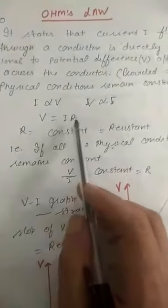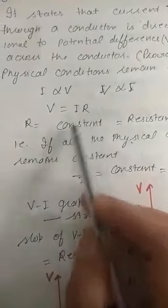And V is directly proportional to I. And V is equal to IR. Here we have taken the R as a constant, and this constant R is known as resistance. This is known as resistance. Means if all the physical conditions remain constant, so V upon I, that remains always constant.